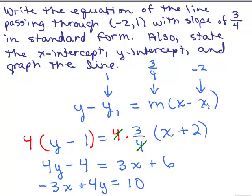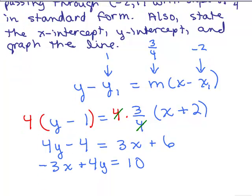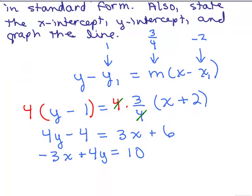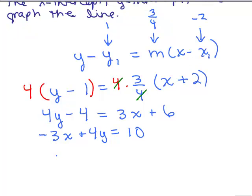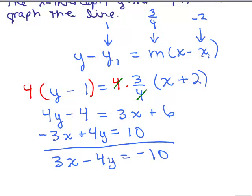I'm going to add 4 to both sides. So I've put this equation in standard form. Remember, you can also multiply both sides by negative 1 so that the first term's positive, and write it as 3x minus 4y equals negative 10. Both of these are correct. I'm going to write this as the answer in standard form.